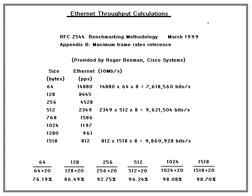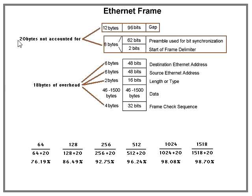That's all for this video. It shows you why you cannot get 100 percent throughput because of those 20 bytes — 12 for the inter-frame gap and 8 for the preamble. This is very useful for real-life situations when customers aren't well versed in the calculations; you can explain to them exactly why it happens. Thank you for watching.